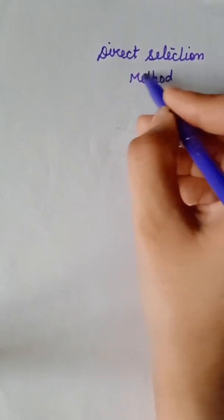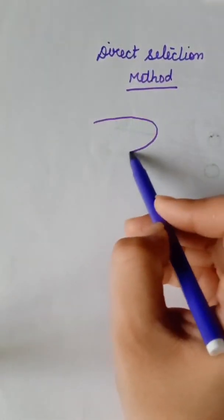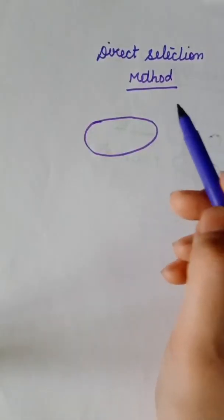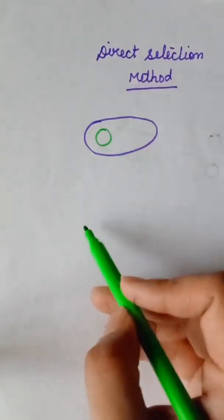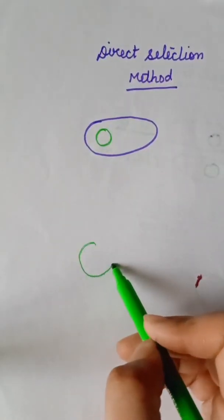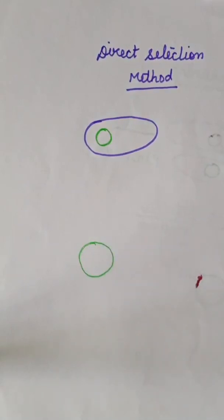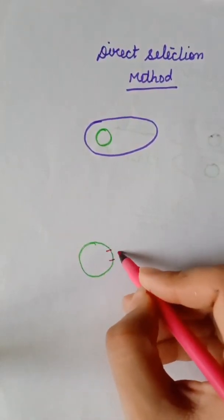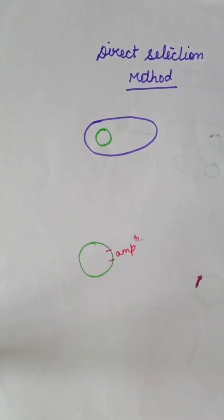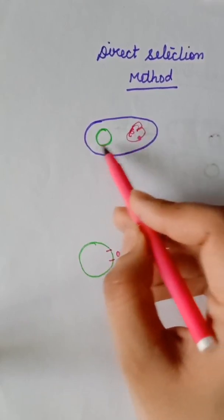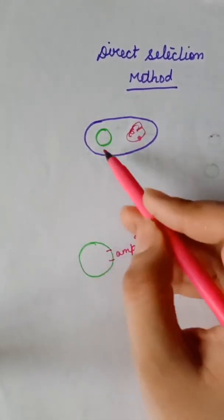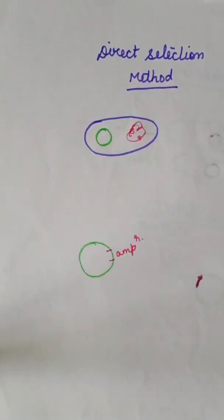Consider bacterial cells — for example, E. coli — in which a normal plasmid is inserted. In this normal plasmid, an ampicillin-resistant gene is present. So these cells become ampicillin-resistant because the ampicillin-resistant gene is present in the normal plasmid.